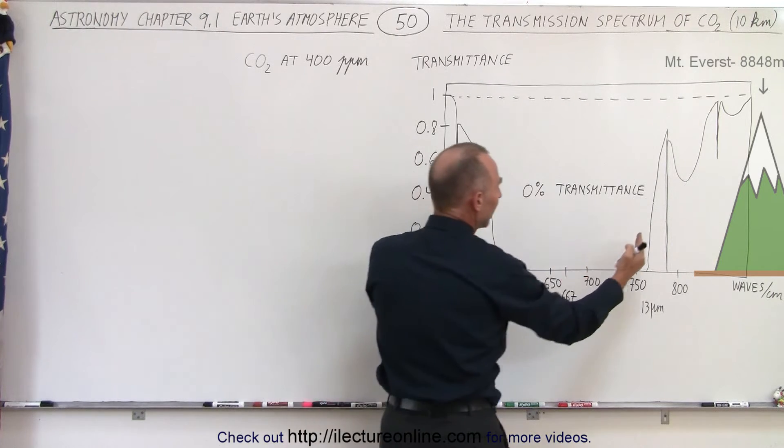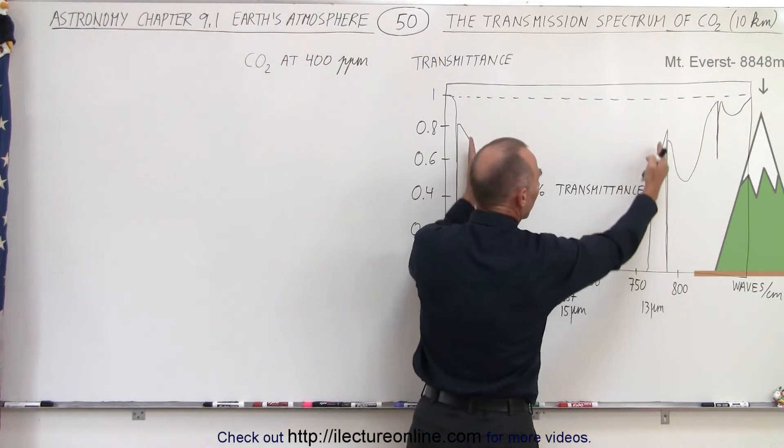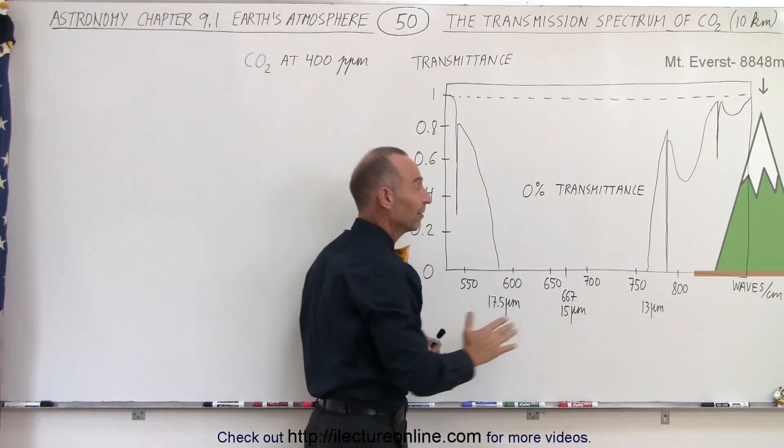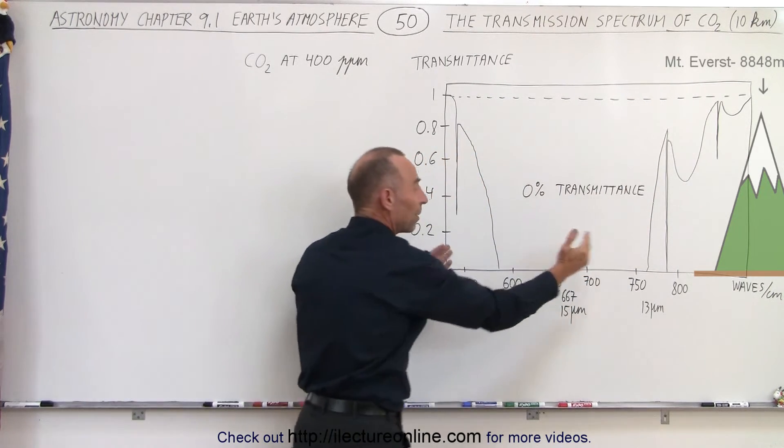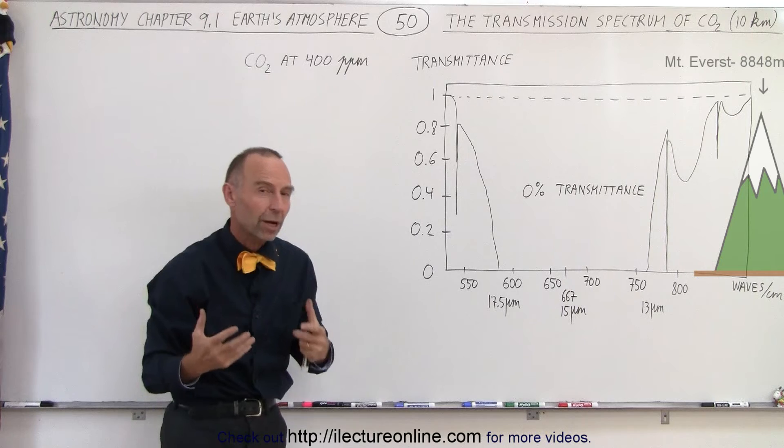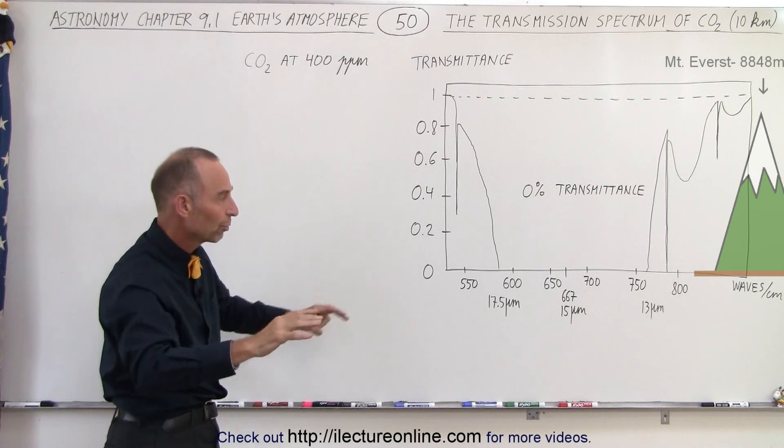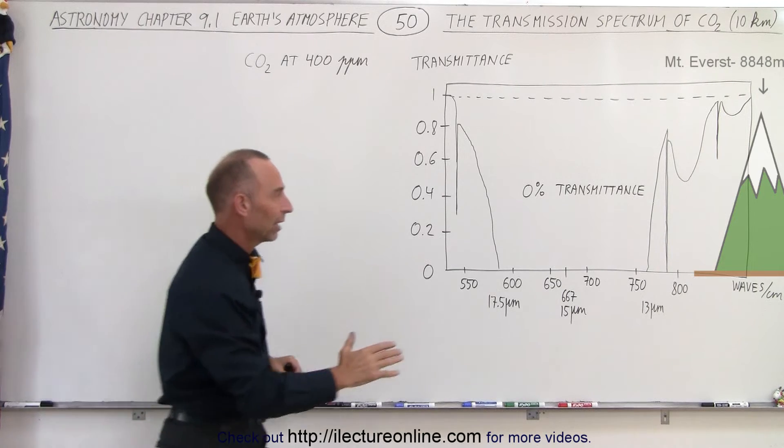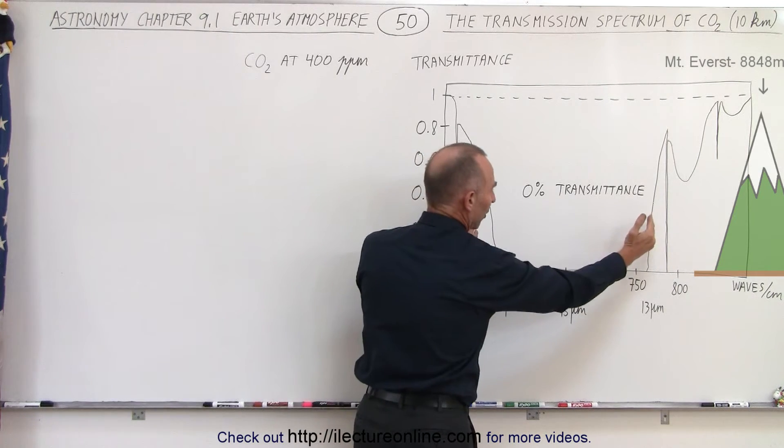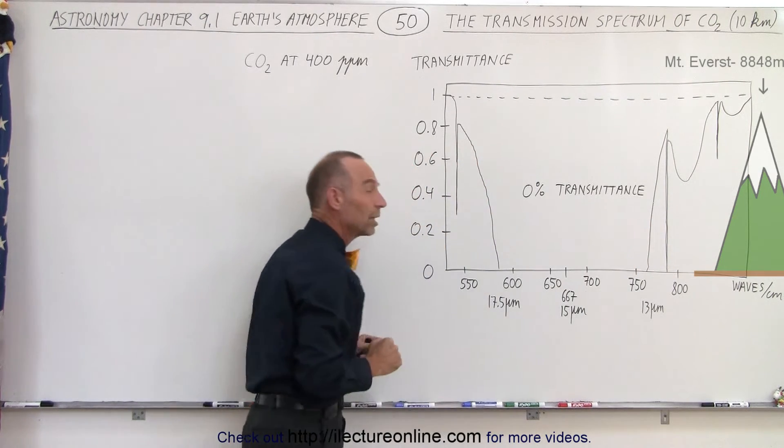So basically, it is this band right here where carbon dioxide is the most effective, and that's the predominant means and predominant range of wavelengths where carbon dioxide is actually able to keep the lower troposphere nice and warm. It's because it absorbs this big band of radiation right here.